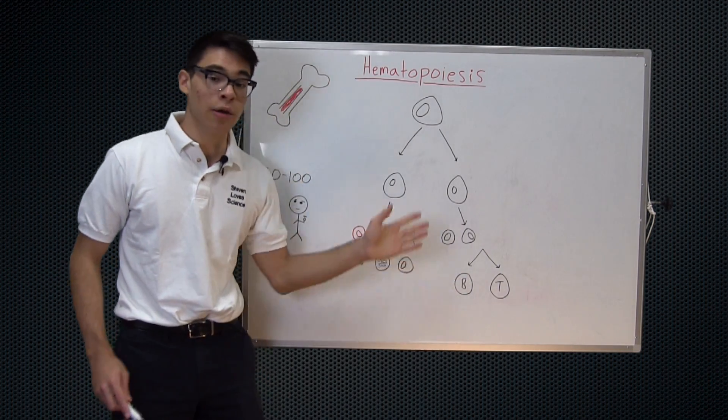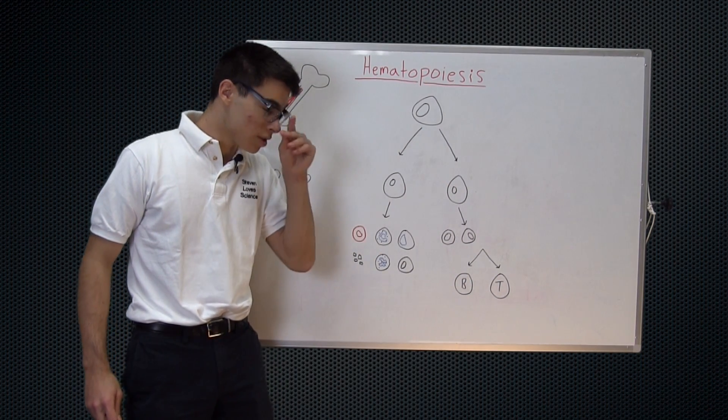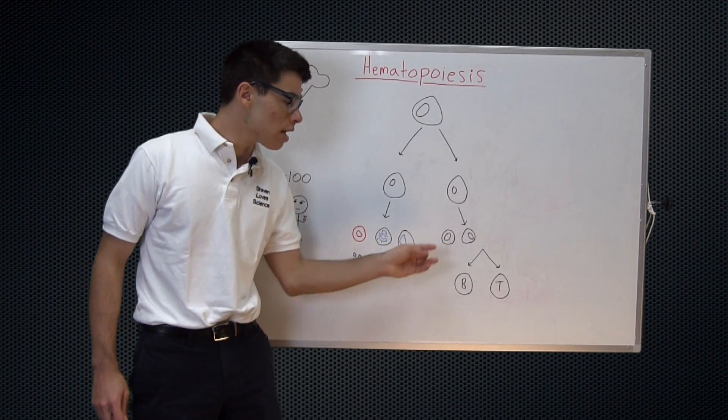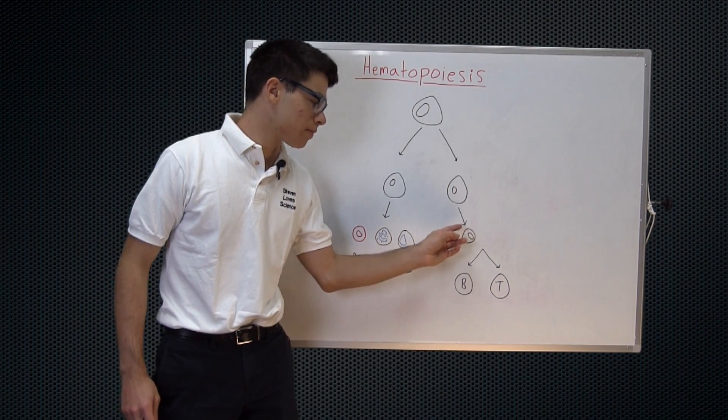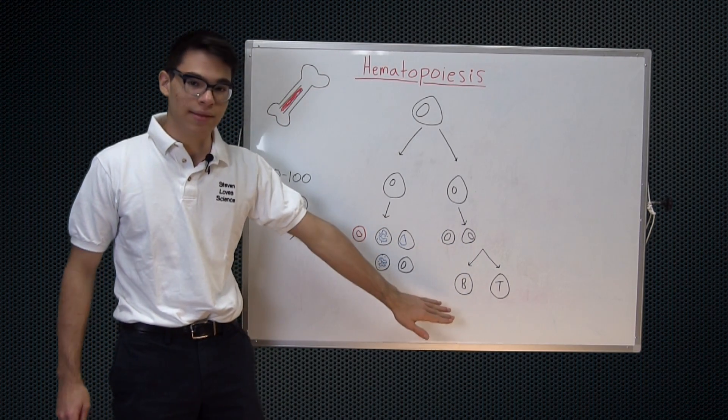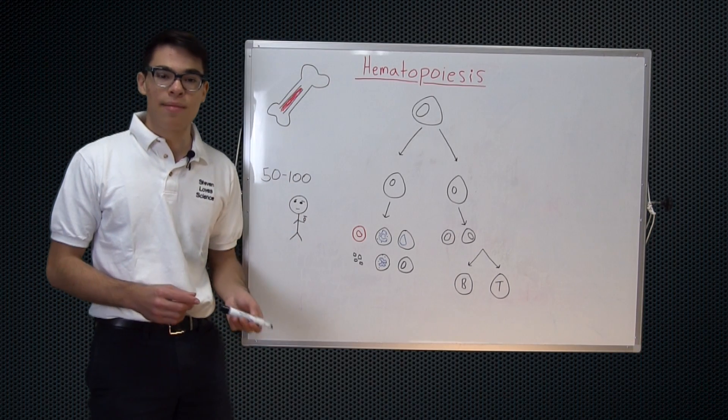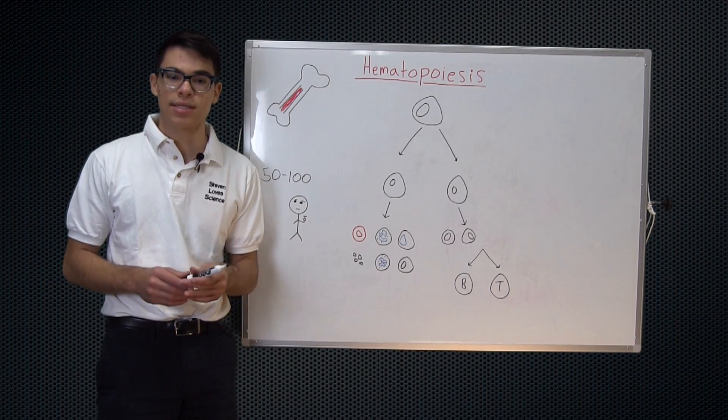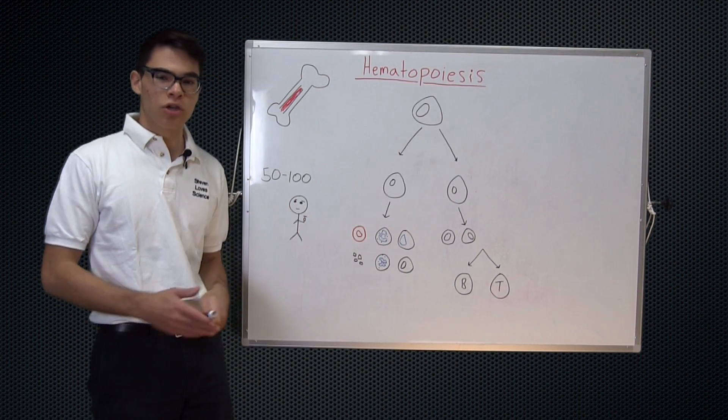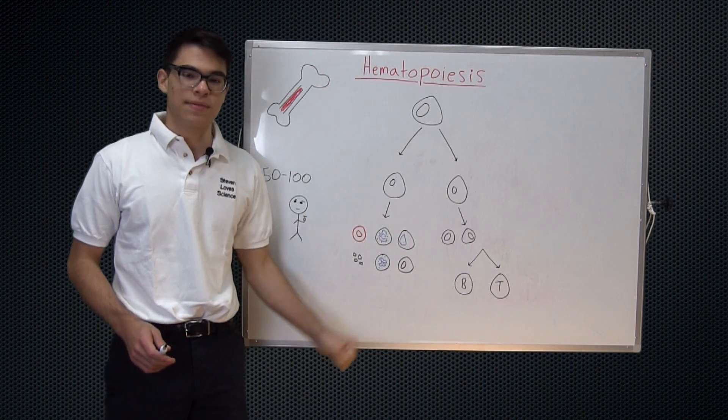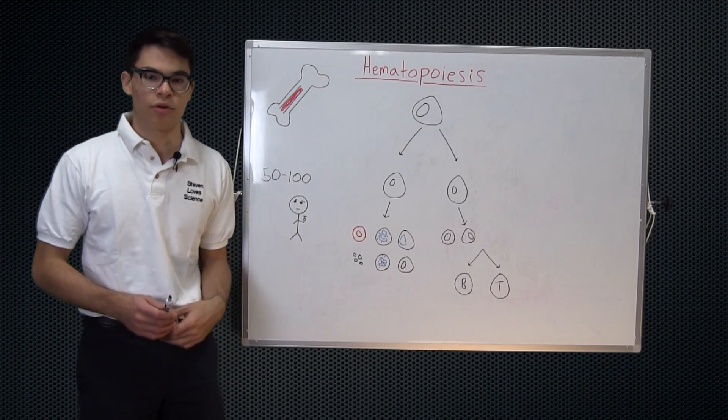And looking over here we have our lymphoid cells which include again dendritic cells, the NK cell, and our major players in adaptive immunity, our B and T lymphocytes. In discussing hematopoiesis we have to discuss a process that allows one cell to go into any of these types of cells down here and more that I have not included on the board.